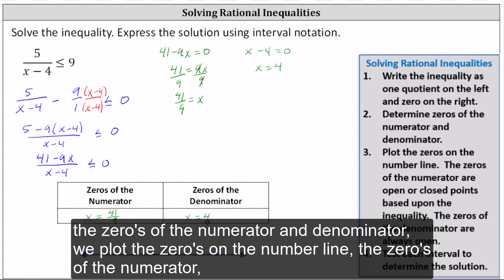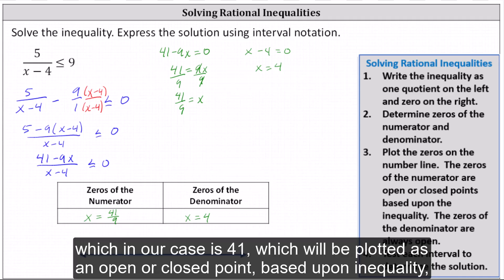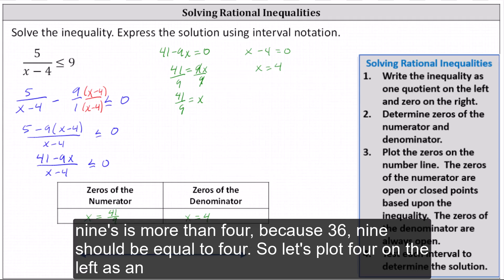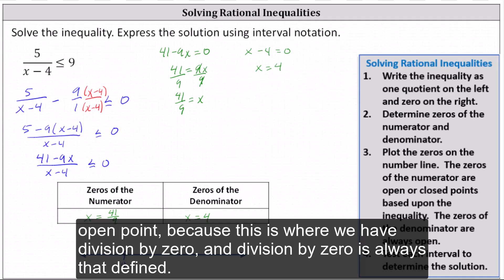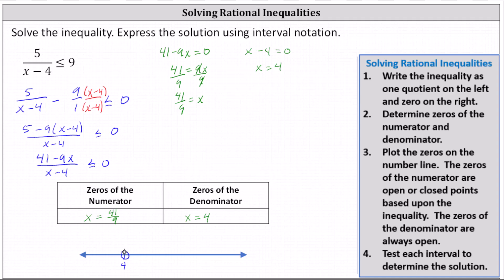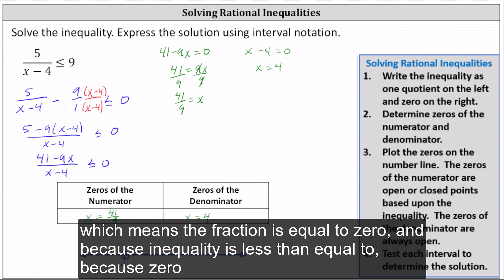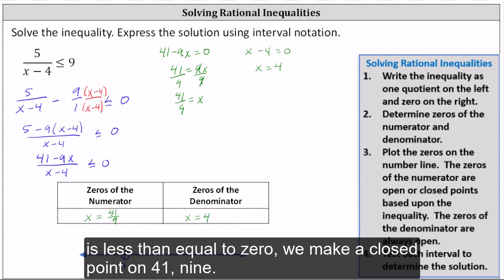Now that we have the zeros of the numerator and denominator, we plot them on the number line. The zero of the numerator, 41 ninths, is plotted as an open or closed point based on the inequality. The zero of the denominator is always plotted as an open point. Notice 41 ninths is more than four because 36 ninths equals four. We plot four as an open point because division by zero is undefined. When x equals 41 ninths, the numerator is zero and the denominator is non-zero, so the fraction equals zero. Because the inequality is less than or equal to, zero satisfies it, so we make a closed point at 41 ninths.